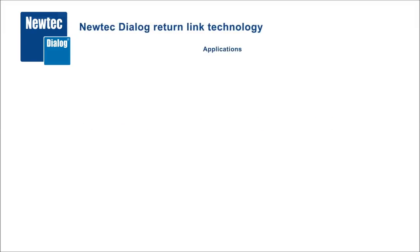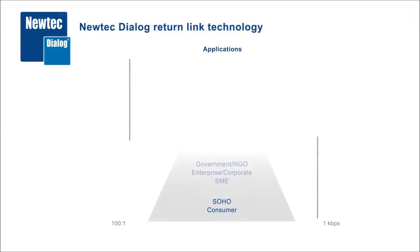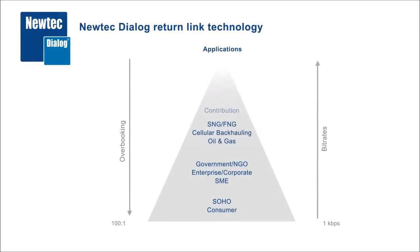If you look at today's applications, you can categorize them typically in what we call at NewTek the IP pyramid. What you see at the bottom are the applications that have a relatively low bitrate, but a high degree of overbooking. Consumer broadband access is a typical example of that.